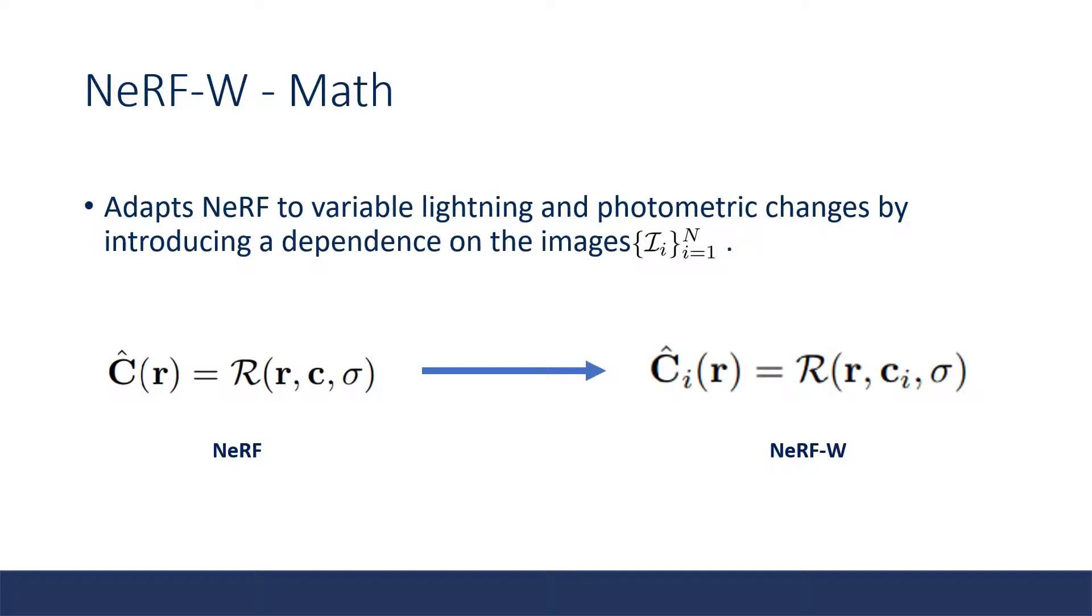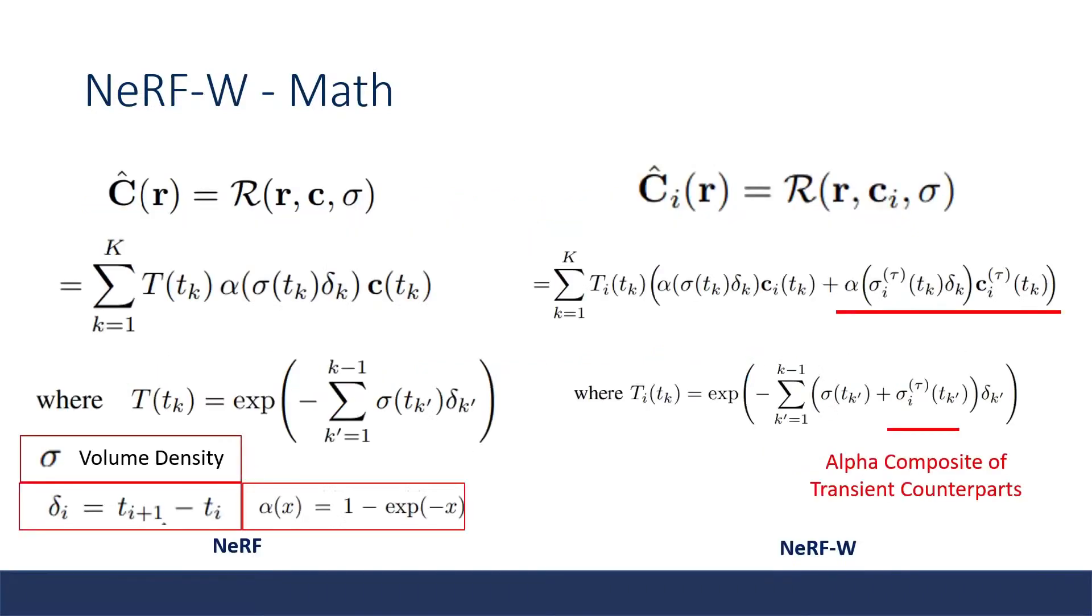The mathematical change mainly starts with volumetric rendering. For volumetric rendering, it is calculated the exact same way as NeRF, but due to the fact that NeRF-W has static and transient colors, these are combined together in an alpha composite inside the quadrature volumetric rendering. Here tau represents the transient density and color.